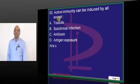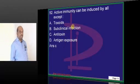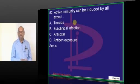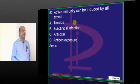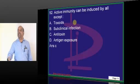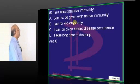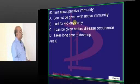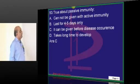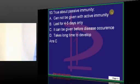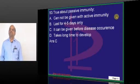What you get through immunoglobulin or antitoxin is passive immunity, not active immunity, because it does not stimulate any immunological memory. What you get through live vaccine, killed vaccine, subclinical infection, or natural infection stimulates active immunity and immunological memory. Passive immunity can be given before disease occurrence — for example, in a dog bite you give immunoglobulin even before rabies starts.